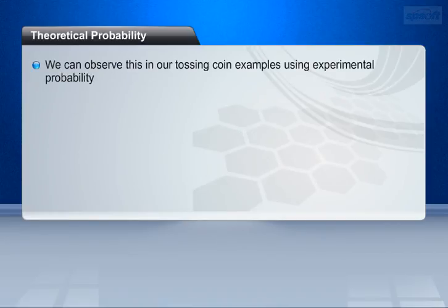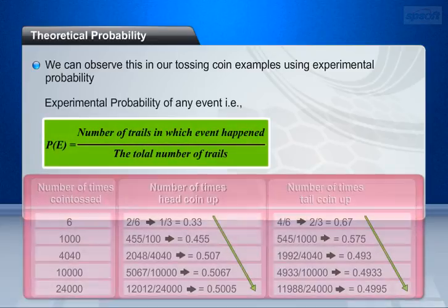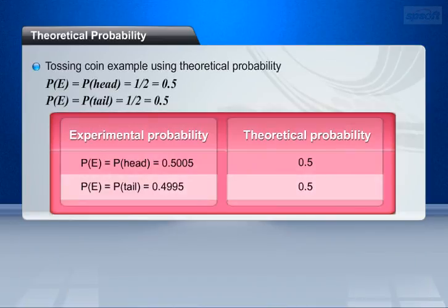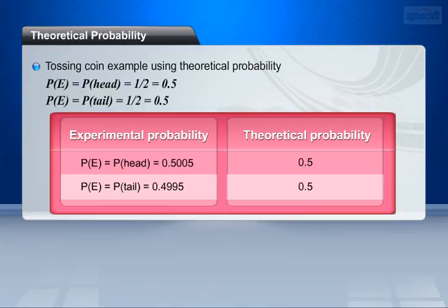We can observe this in our coin tossing examples using experimental probability, where the results are shown in a table. Recall that experimental probability of any event is calculated as: P(event) = number of trials in which the event happened divided by total number of trials. We got the theoretical probability of getting a head or tail as P(E) = P(head) = 1/2 = 0.5, whereas the experimental probability value was 0.5005. Similarly, P(E) = P(tail) = 1/2 = 0.5, whereas the experimental probability was 0.4995. We observe that theoretical and experimental probability values are almost the same.